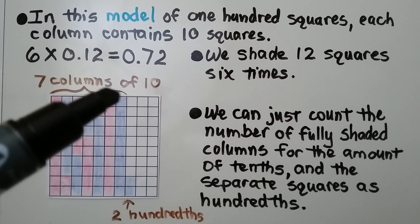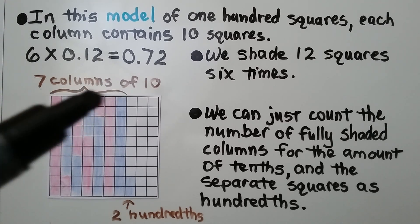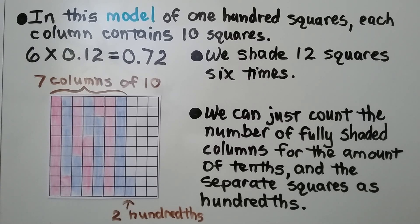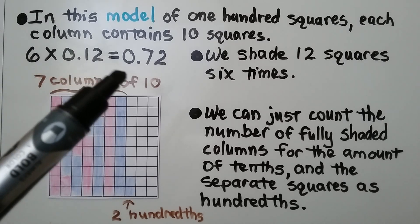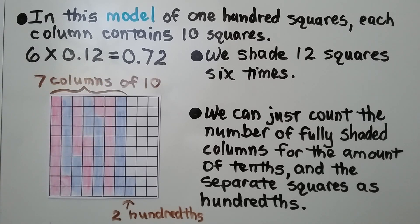That's seven columns of ten, so that would be seven-tenths. Then we have two little hundredths here.